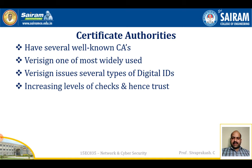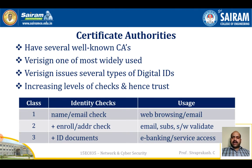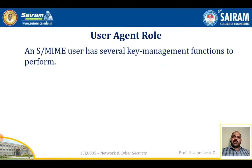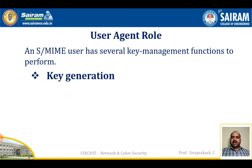VeriSign issues several types of digital IDs, which increases the level of checks and hence improves trust. There are three different classes with identity checks and usage. The user agent role in S/MIME involves several key management functions to perform, including key generation, registration, and certificate storage and retrieval.